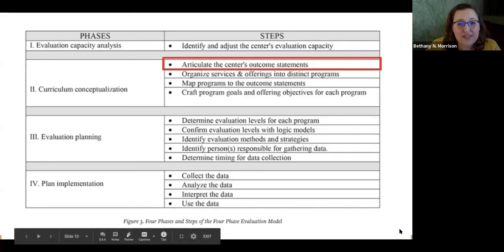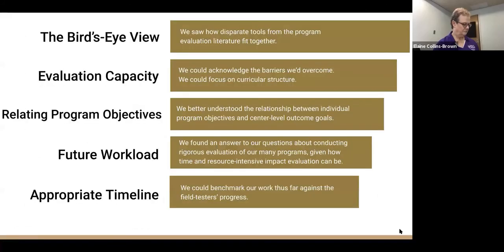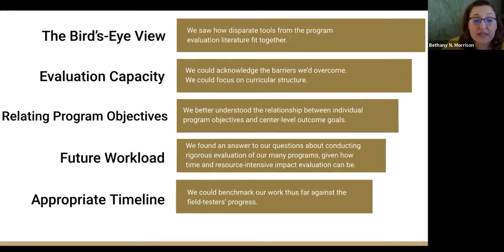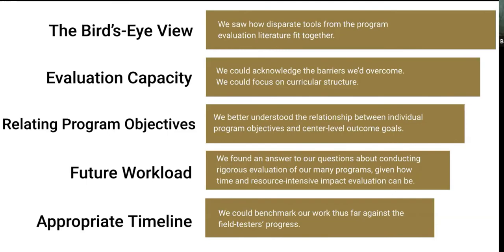I wanted to share a few of the insights we gained from engaging with that work. The first insight, which I'm calling a bird's eye view: we had been reading the fundamentals of the program evaluation literature — Kirkpatrick and Kellogg — and had explored program mapping tools and logic models. Heinz 2017 articulated how these ideas and tools all fit together and suggested a sequence for their use. Another insight was a better understanding of our evaluation capacity. The first phase of the Heinz model is to reflect on your organization's capacity, and as we discussed the article informally, we were able to recognize both our good fortune and the hard work we had put in, which put us in a very good position to engage in evaluation work. We saw together as a team what page we were on and what we needed to do next, which was to focus on the curricular structure.